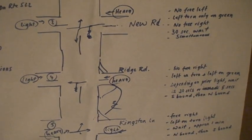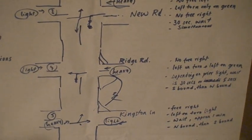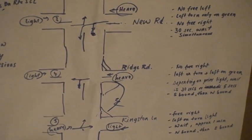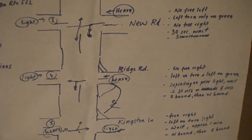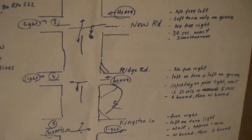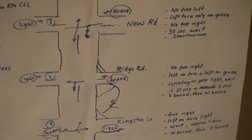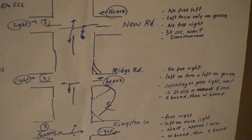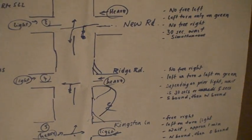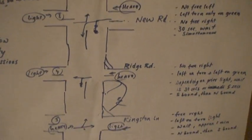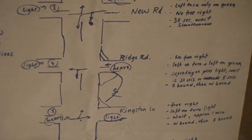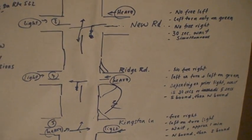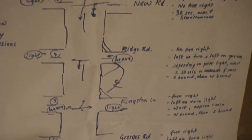And then again, here's the next one, that's the Ridge Road, where again it's a bit complicated. Depending on when you come, if you're lucky you can go through right away, maybe about a few seconds, but if you're not, then again you have to wait about 25 to 30 seconds.